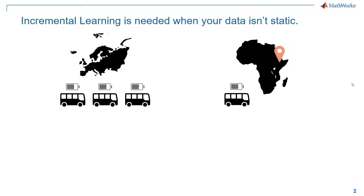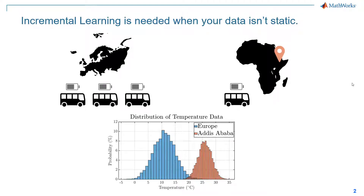That's one of the use cases where incremental learning can help. A second is when the machine learning task itself evolves over time — you need to identify conditions that weren't present during initial training. In our example, imagine you want to add a condition to your battery monitoring system that alerts the driver when the battery discharges unusually quickly, like for vehicles operated in very cold conditions in Siberia. You may not be able to collect sufficient data until you deploy vehicles to those extreme conditions.